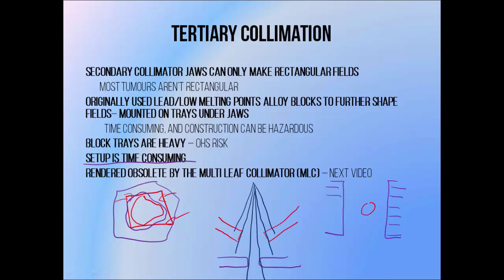Briefly, multi-leaf collimators are a set of collimator jaws that have been divided into small sections or leaves which can move independently. They allow us to produce electronically programmed beam shapes without staff having to change them manually.